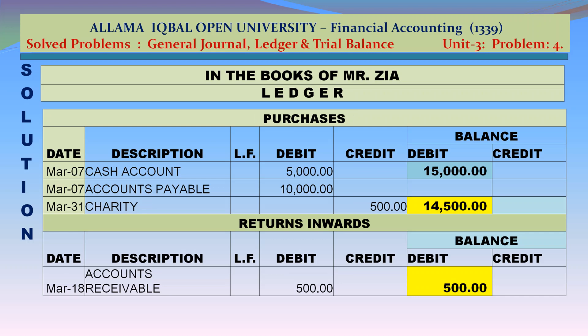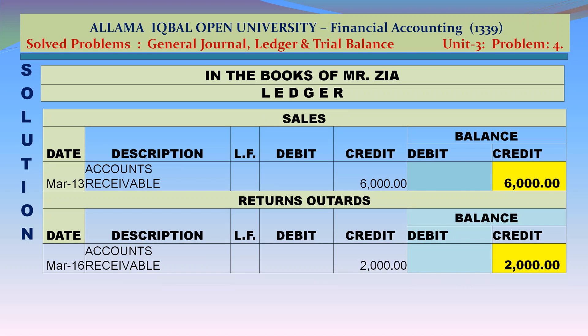Purchases account: debit — cash account March 7 Rs 5,000; accounts payable March 7 Rs 10,000. Credit — charity March 31 Rs 500. Closing balance: Rs 14,500 debit. Returns inwards: debit — accounts receivable March 18 Rs 500. Closing balance: Rs 500 debit. Sales account: credit — accounts receivable March 13 Rs 6,000. Closing balance: Rs 6,000 credit. Returns outwards: credit — accounts receivable March 16 Rs 2,000. Closing balance: Rs 2,000 credit.